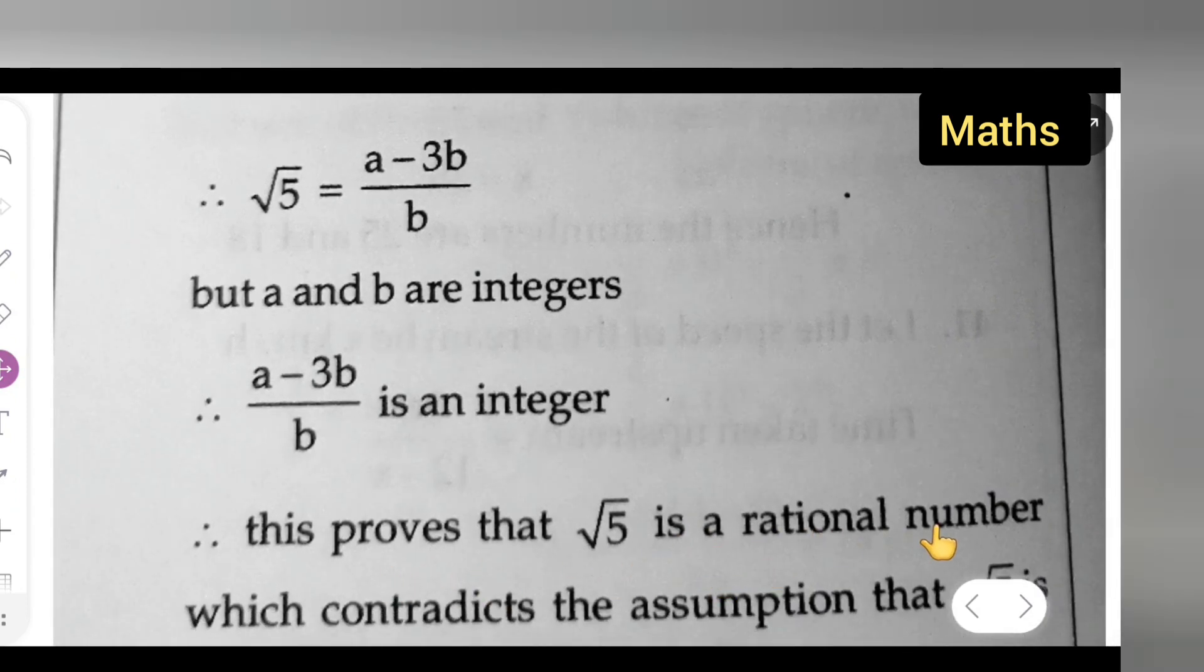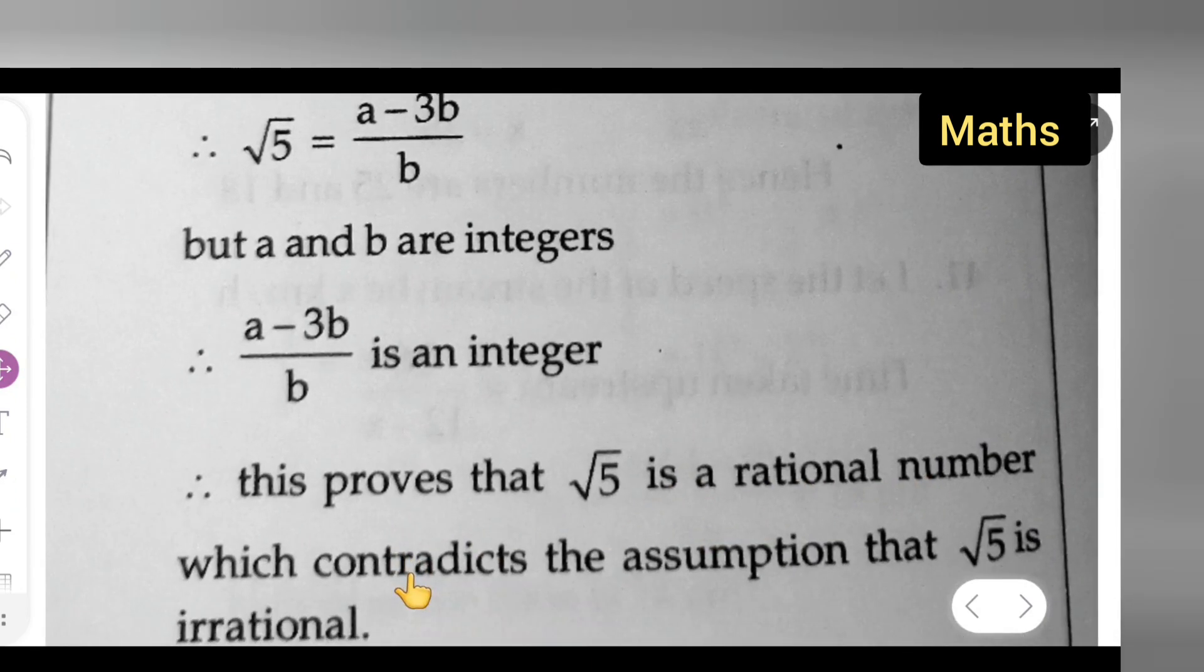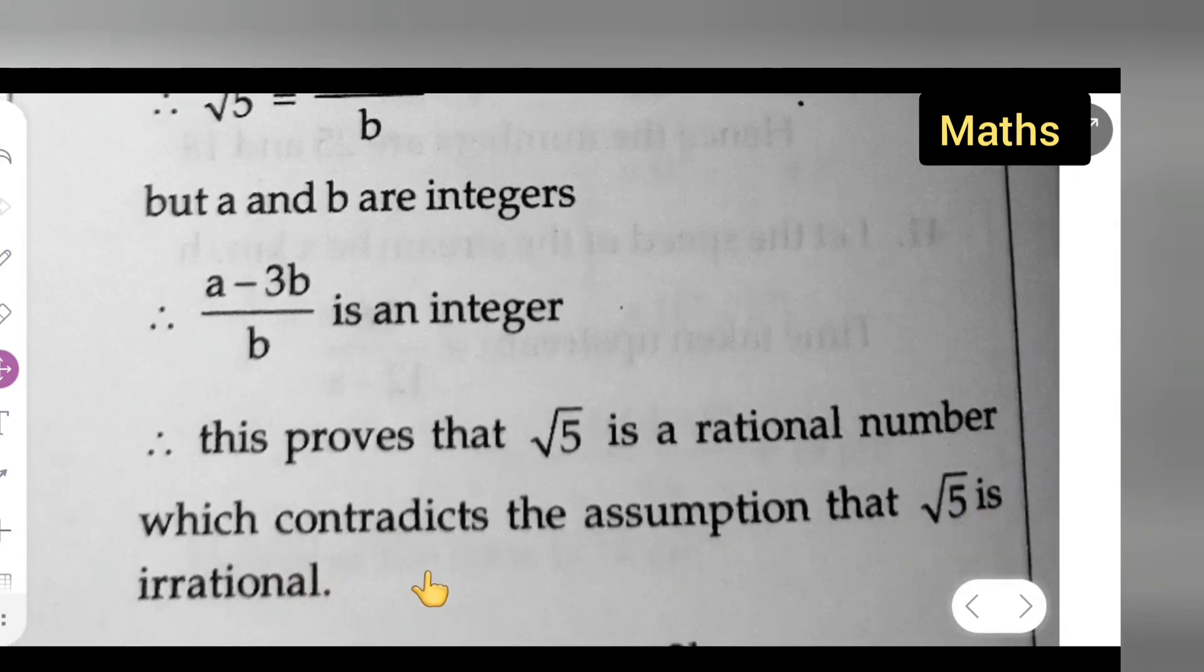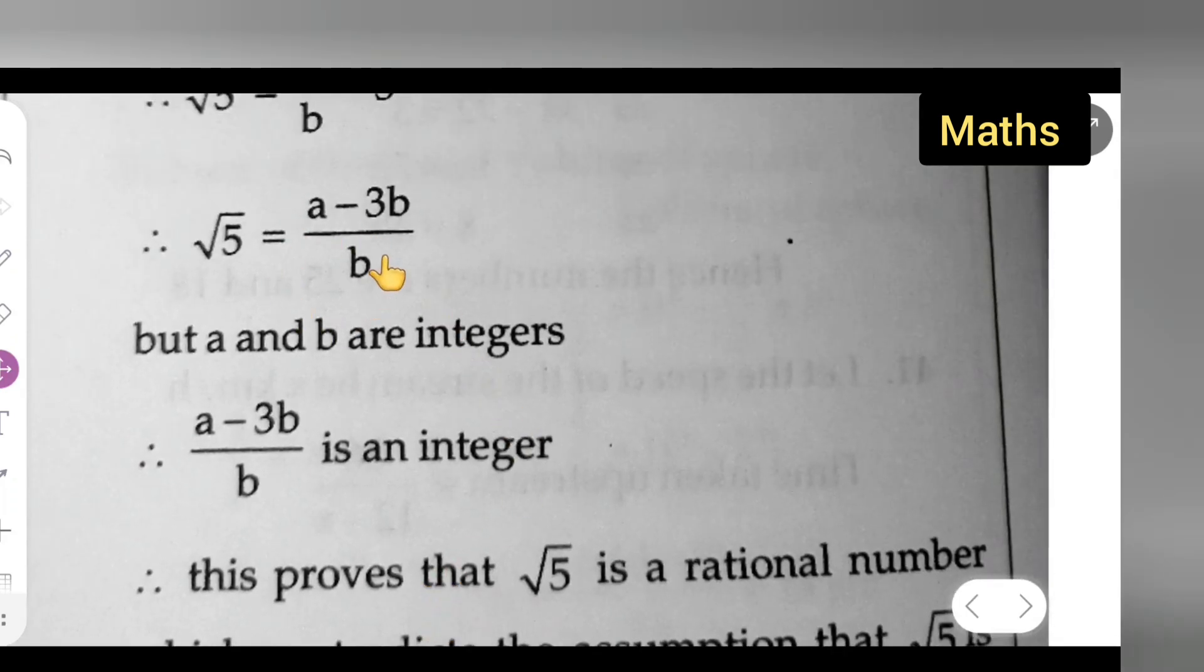And this proves that root 5 is a rational number, which contradicts the assumption that root 5 is irrational. This is not equal, but here it is showing equal because rational and irrational cannot be equal, so obviously it is contradicting.